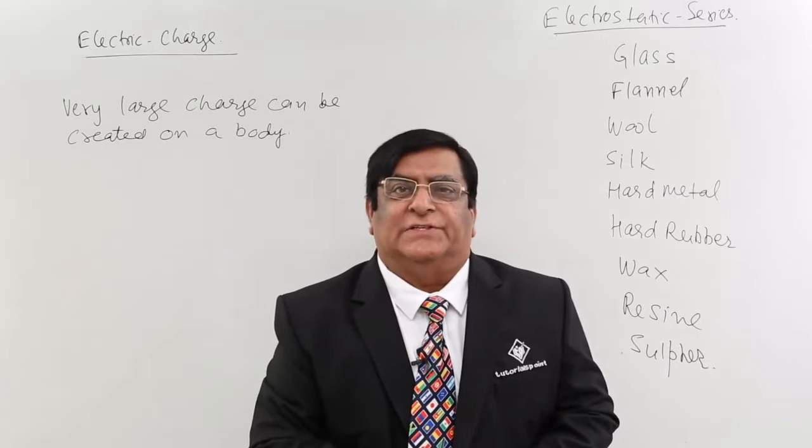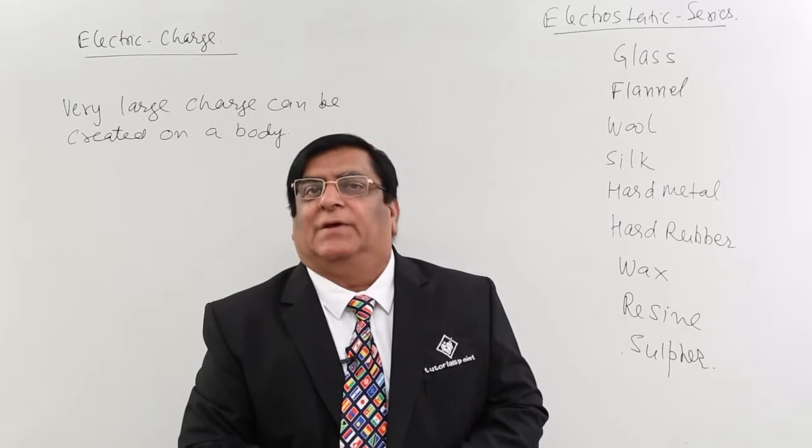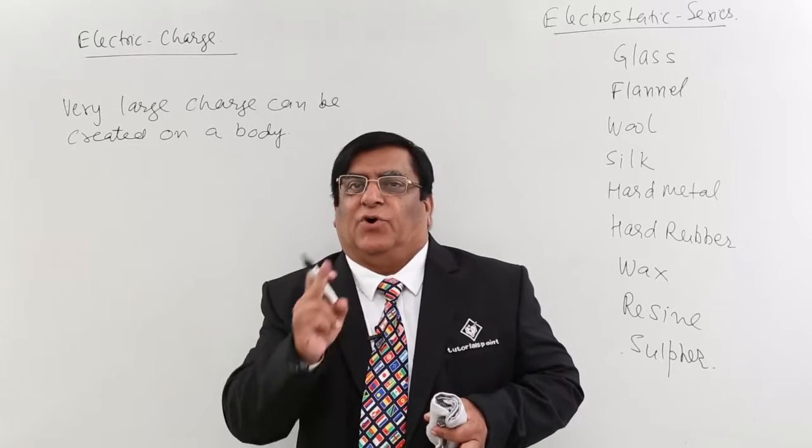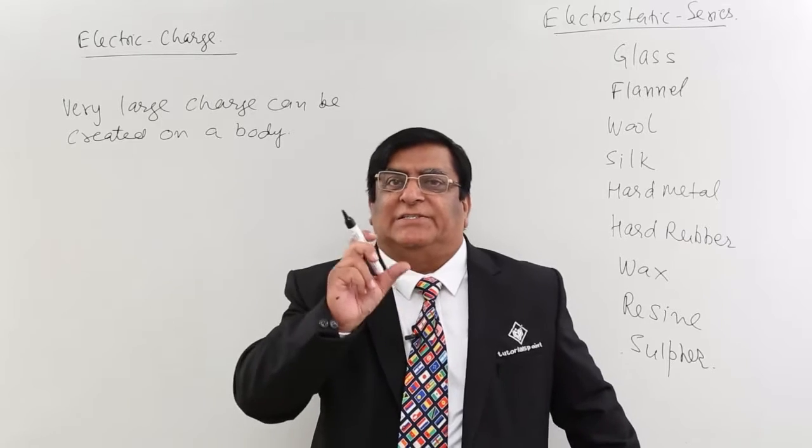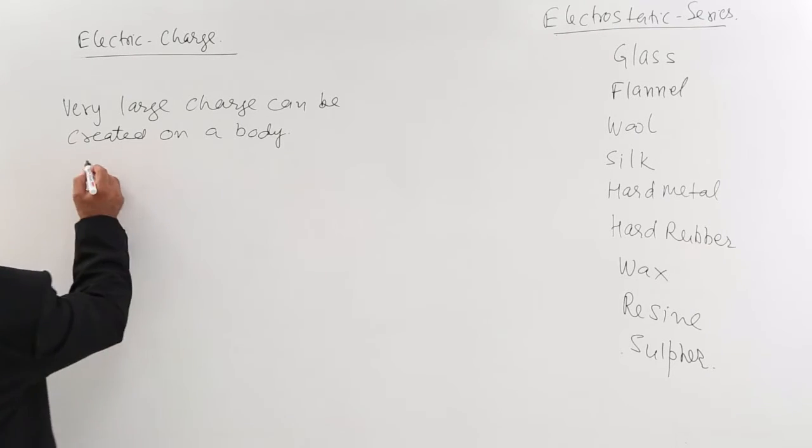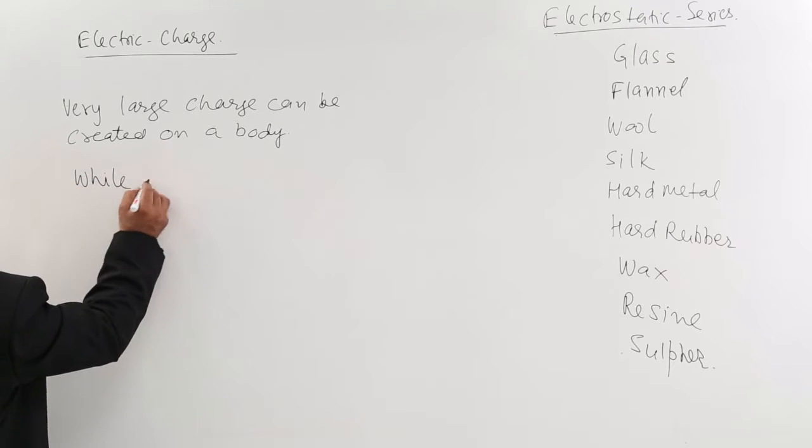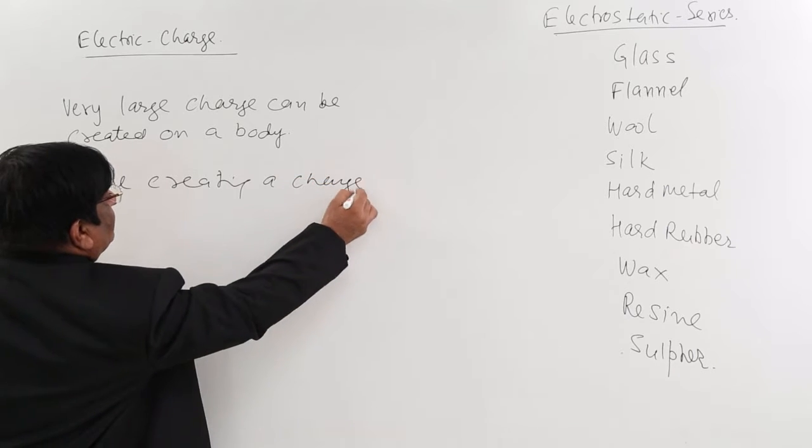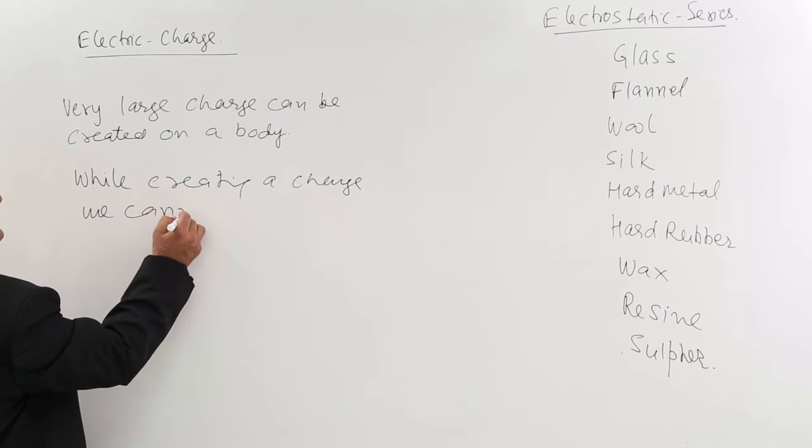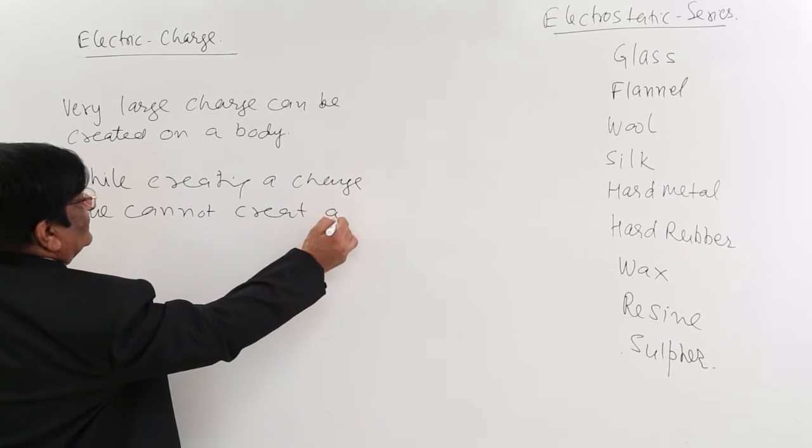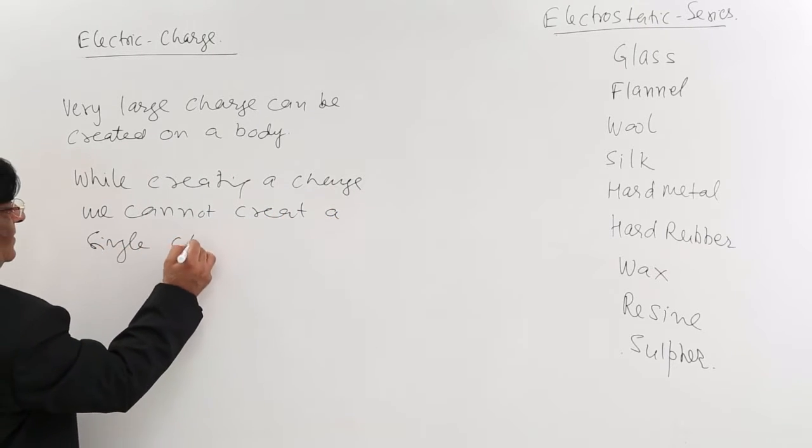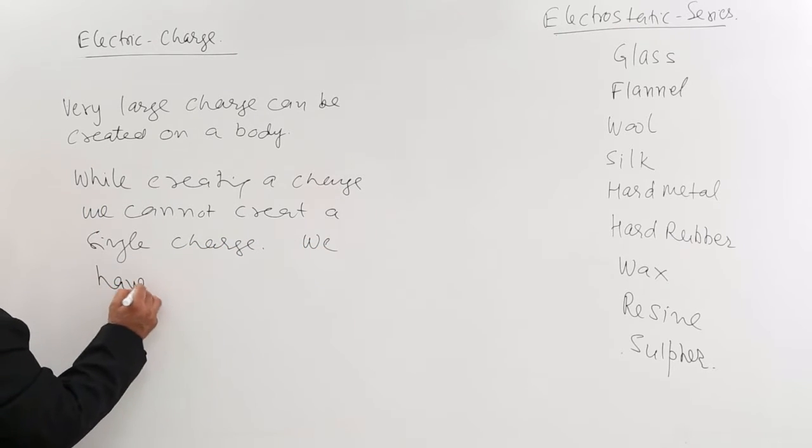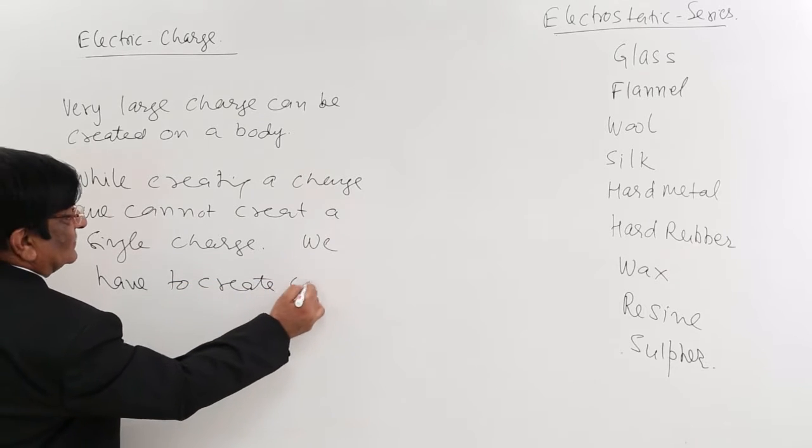The charges are positive and negative, two types. When we develop by rubbing positive charge or negative charge, then both the charges are created in equal quantity. So while creating a charge, we cannot create a single charge.